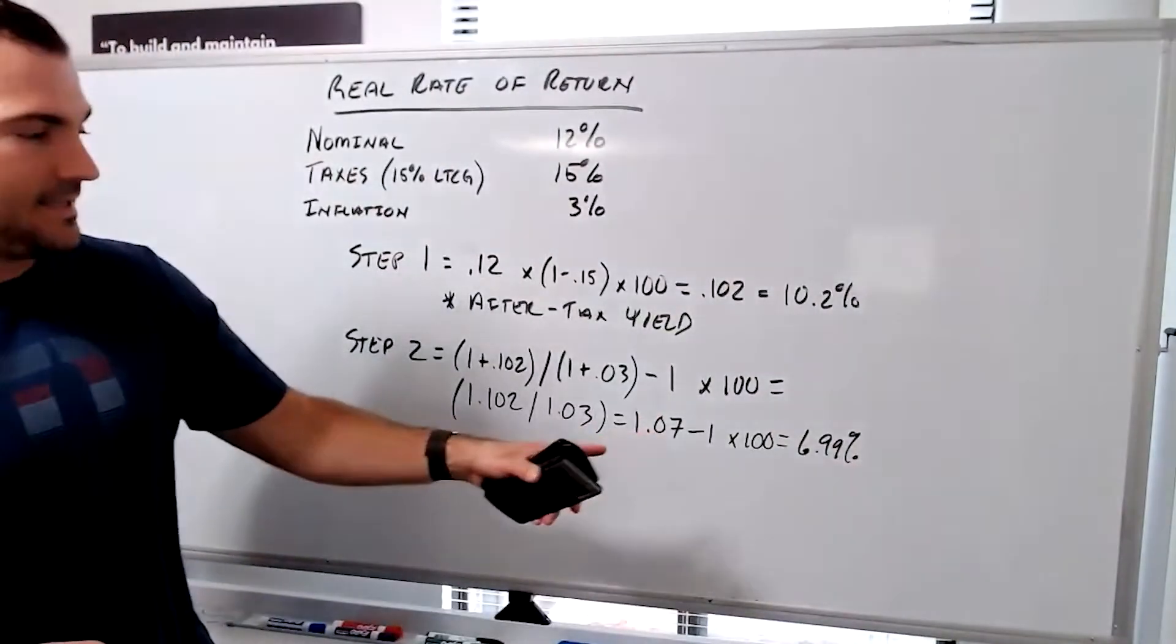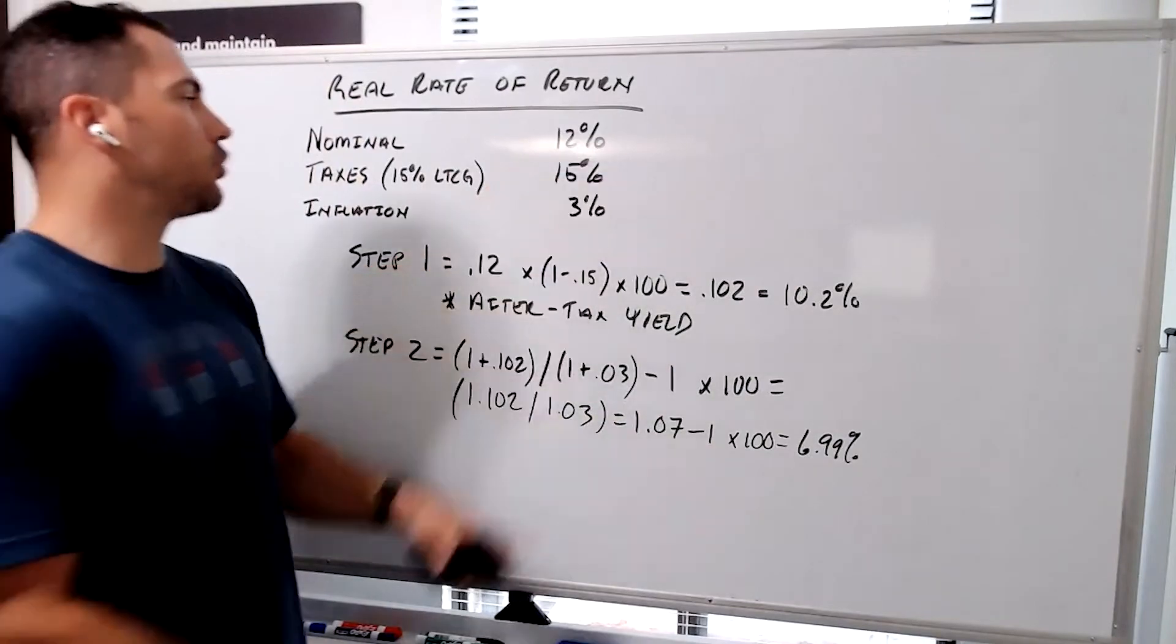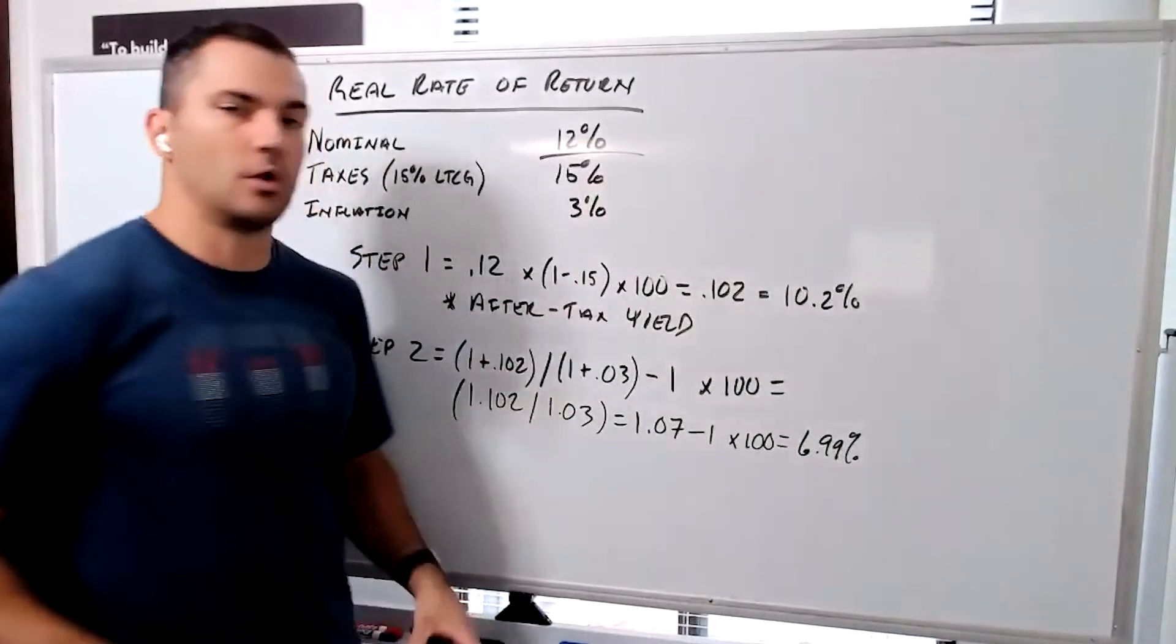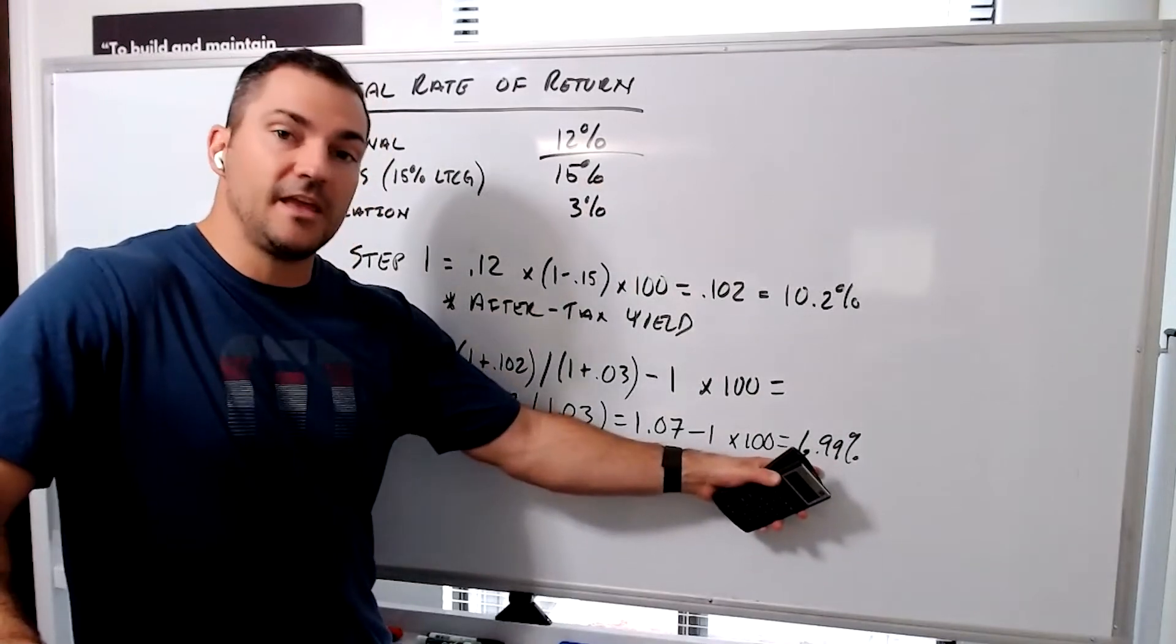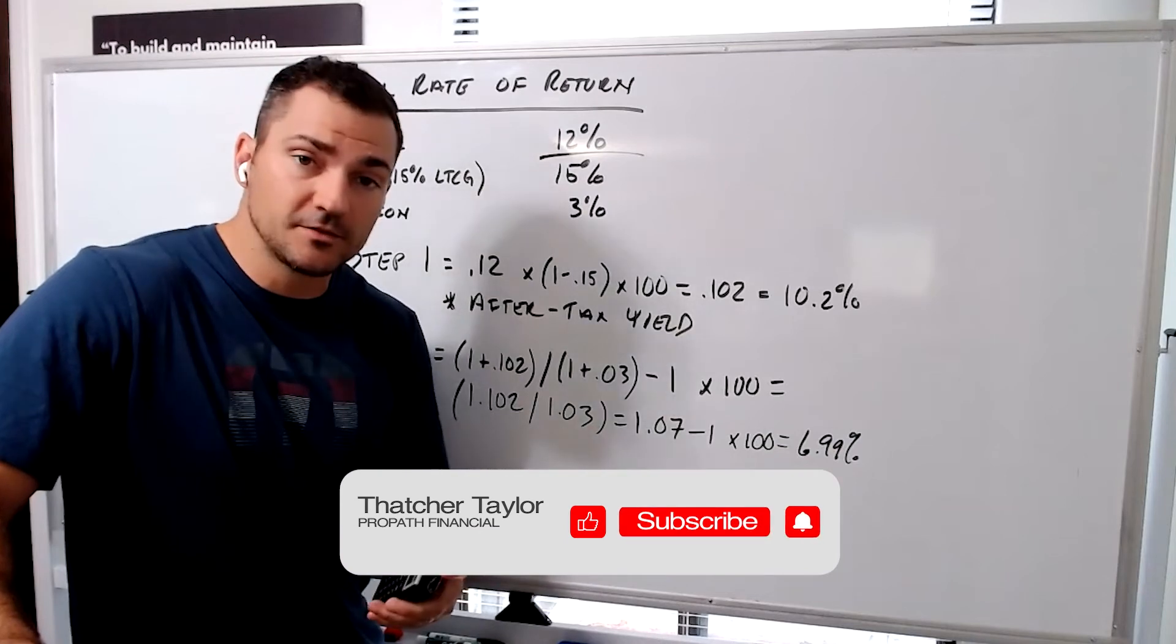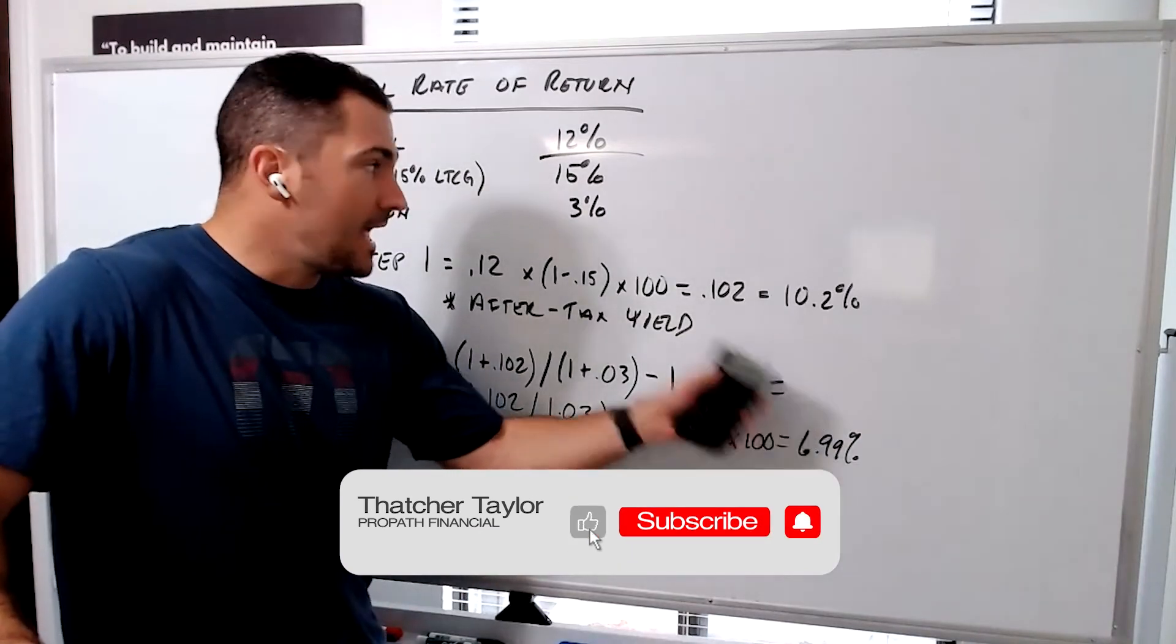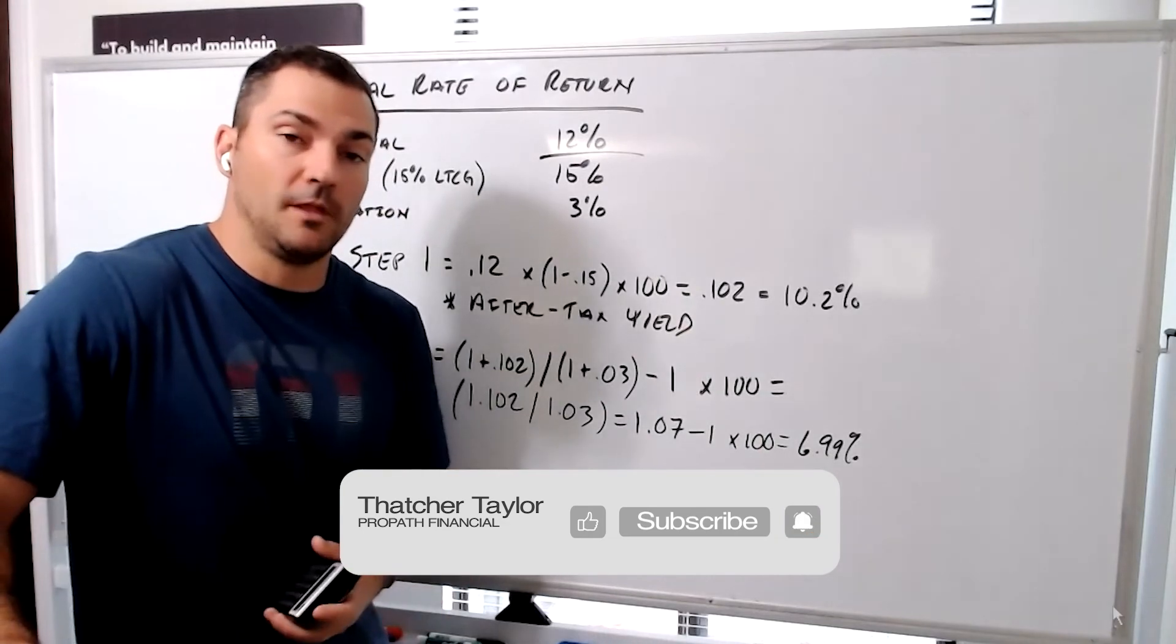That is the actual rate of return after inflation and after taxes on a 12% return on investment in any given year. This is something that you need to think about when you're talking about returns or performance. How are you mitigating these extra types of bills as you move through the accumulation of assets?